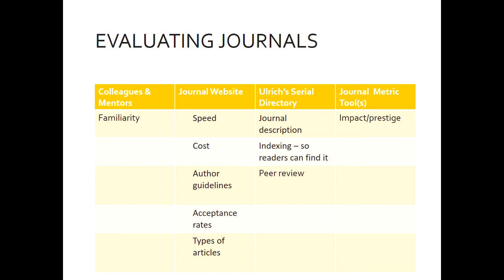Also consider peer review — is the journal peer reviewed? You want to know whether other experts in your field read articles submitted to this journal to validate the research. And then finally, journal metrics: it evaluates the impact or prestige of the journal. There's a scholarly conversation going on within your field about how much weight people give to a particular journal. That's only one metric and we'll talk more about that later.